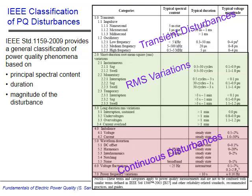Power quality phenomena are classified by IEEE Standard 1159-2009 into three broad categories, as well as a number of subcategories. The classification of a power quality phenomenon is based on its spectral content, duration, and magnitude. The three main categories are classified according to duration.